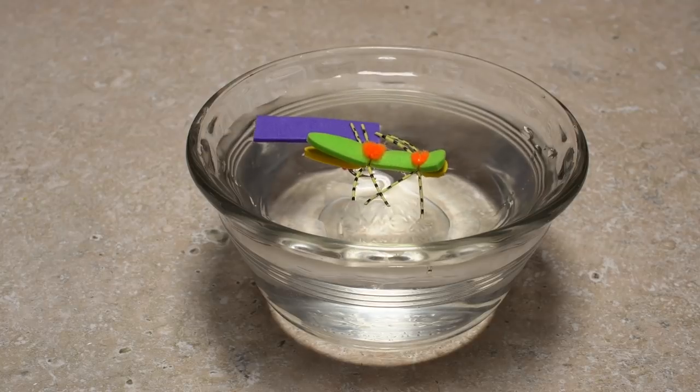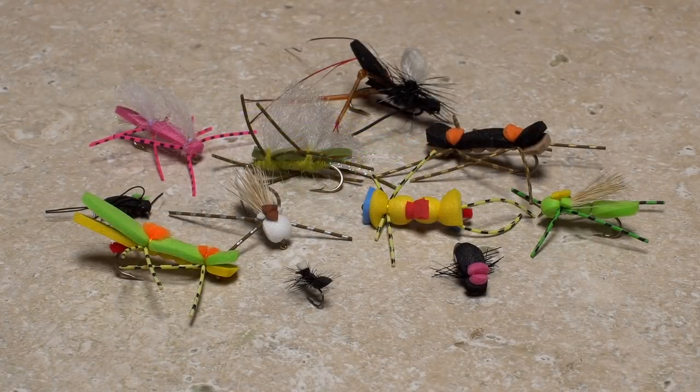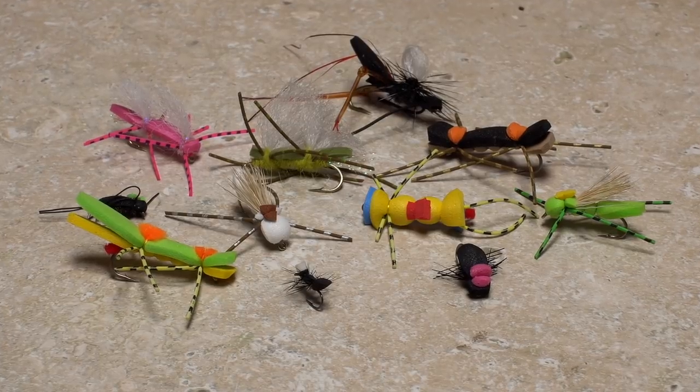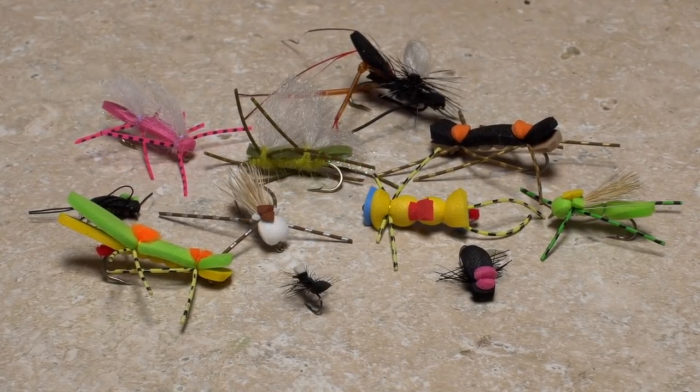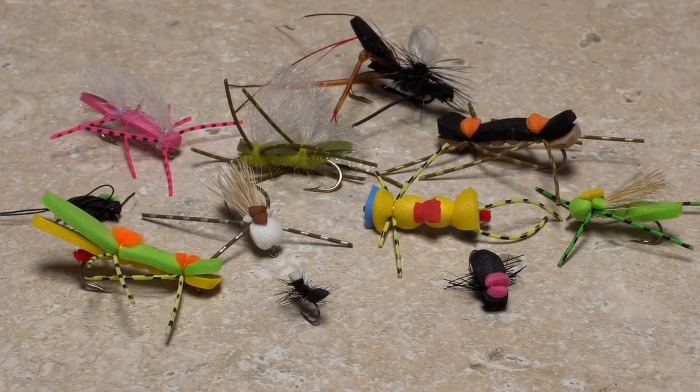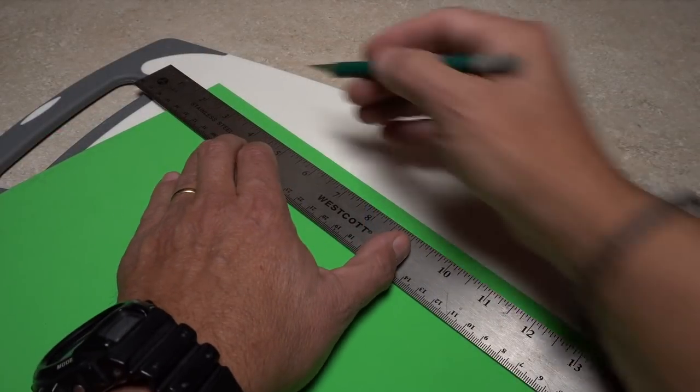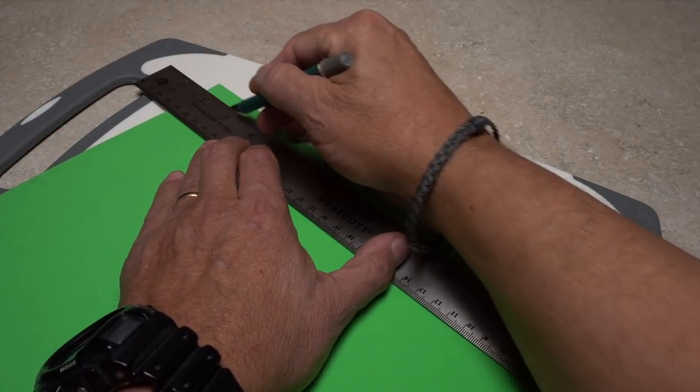This means flies that incorporate foam will also float. Because of this, foam is often used to produce flies that imitate terrestrials such as ants, beetles, crickets, and grasshoppers, but it can be incorporated into any pattern where extra flotation is needed. For most applications, I like to start with even width strips.